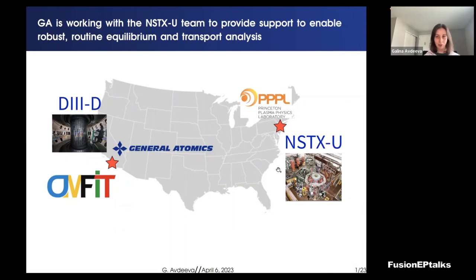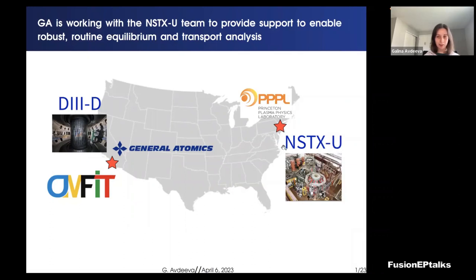Briefly, OMFIT is software that helps scientists concentrate more on the scientific and physics problem rather than writing scripts to plot data, couple different codes, or read and save outputs. It is a really powerful tool for integrated plasma analysis. One of the main goals of this project was to bring the expertise from General Atomics to the Princeton Plasma Physics Laboratory, where the NSTX project is located. NSTX, or NSTX-U upgrade, is a spherical tokamak. I learned how to use OMFIT and best practices, and then I was sent to Princeton, where together with the local team we are adapting the OMFIT workflow to the specifics of the NSTX device and the scientific goals of the NSTX-U project.